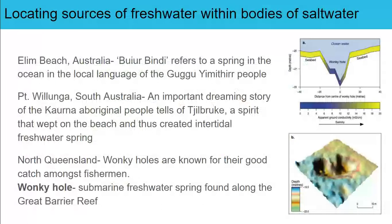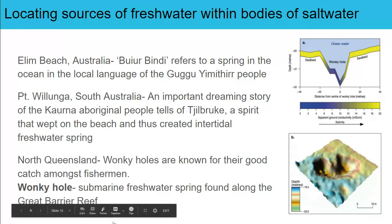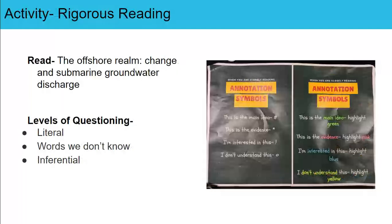A couple of examples in Australia: there's Ellum Beach, also referred to as Biobindi, which means ocean in the local language of the Guru Yirrimir people. We can see in the diagram here a 'wonky hole,' where the salinity — based on color — shows a bluer area lower in salinity. This is where they were actually finding freshwater within bodies of saltwater, which we call wonky holes. Because they are freshwater, they provide a different species of fish than saltwater would, making this area very popular amongst fishermen. Now complete the rigorous reading activity.